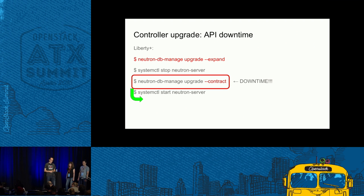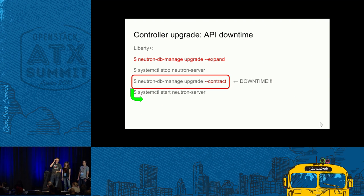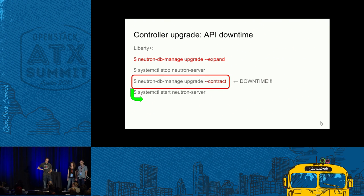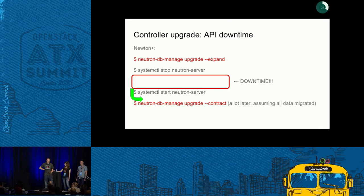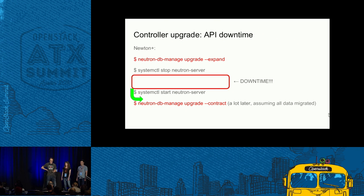We still have significant downtime while applying the contract phase. We were thinking about how to improve this. The improvement is that you want to get rid of this contraction step in the middle. The solution is to do the contraction much later, once you have already started your new controller. But how do you do that? It's not easy to implement from a technical point of view, and that resolution we'll cover in a bit.